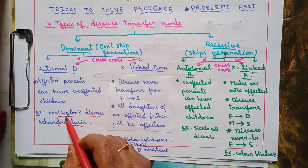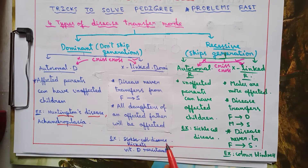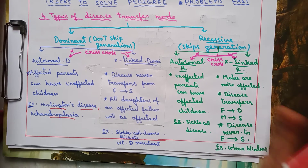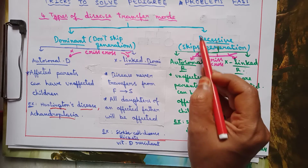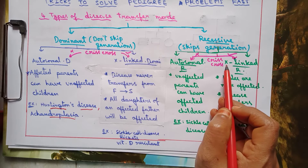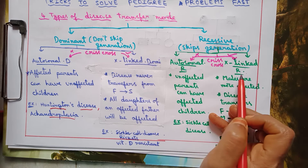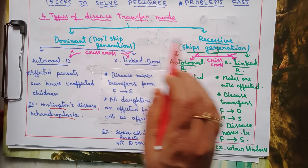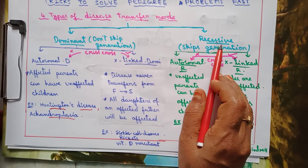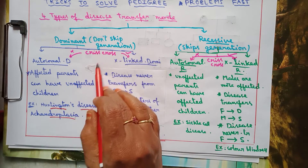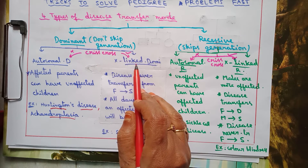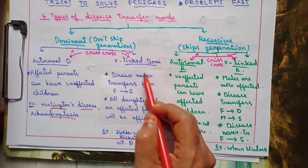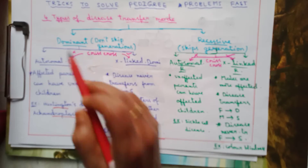Examples of autosomal dominant diseases include Huntington's disease and achondroplasia. An example of x-linked dominant disease is vitamin D-resistant rickets. If the pedigree is recessive, we then determine whether it is autosomal recessive or x-linked recessive by again looking for crisscross inheritance. If crisscross inheritance is seen, it is x-linked; if absent, it is autosomal.